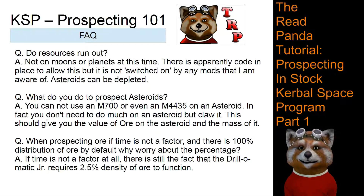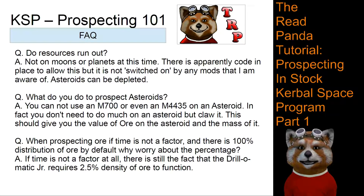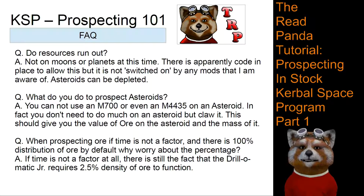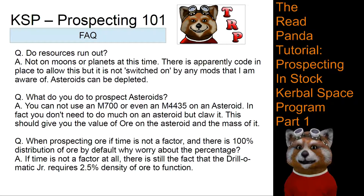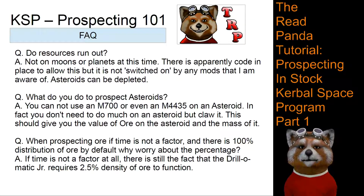What do you do to prospect asteroids? You do not use the scanning mechanisms we covered — simply attach a clawed ship with a claw, and the claw will give you the ore values for the asteroid along with its mass. Regarding whether percentages matter if time isn't a factor: the Drill-O-Matic Junior requires at least 2.5% ore density to function at all — if it's below 2.5%, that drill will not work. And of course, the higher the density, the faster the drills will pull ore out.